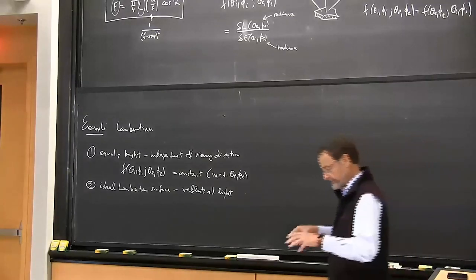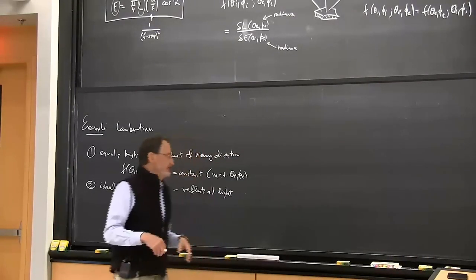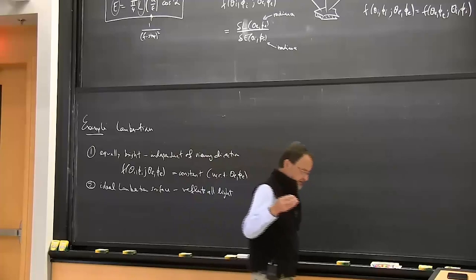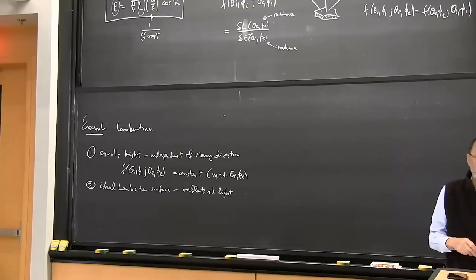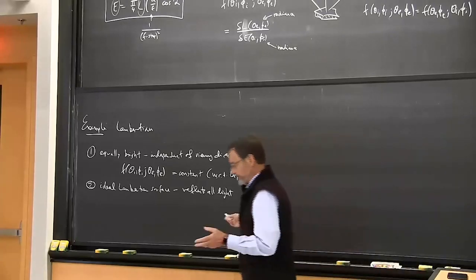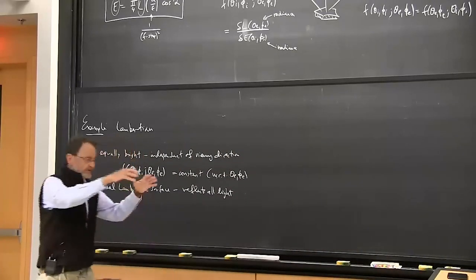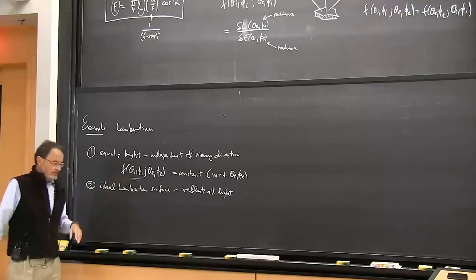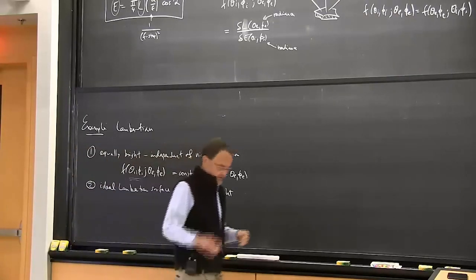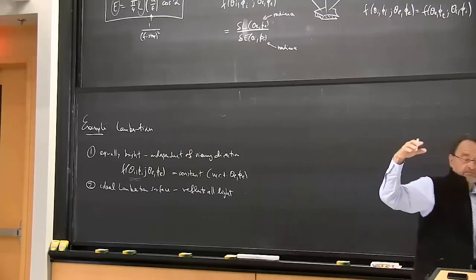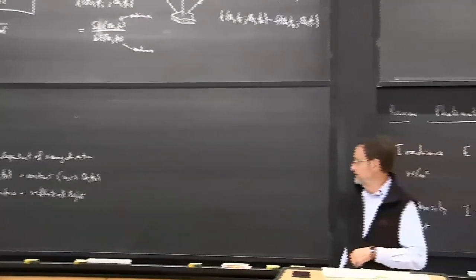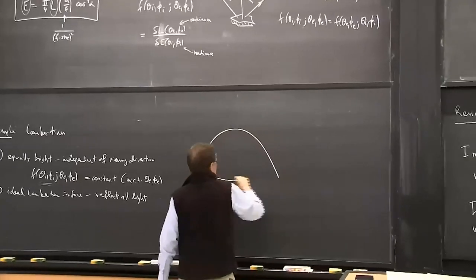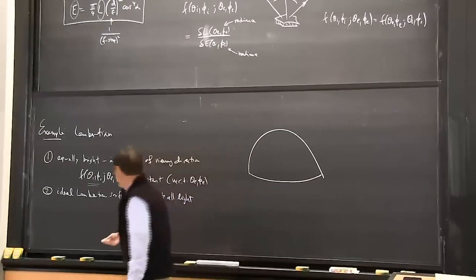The BRDF is sort of the atomic thing—it's the low-level detail. In many cases we're interested in integrals of that. For example, if I don't have a point source but have a distributed source like the lights in this room, I can simply integrate over a hemisphere of incident directions, taking into account how much light is coming from each direction. Similarly, we need to integrate over a hemisphere to get all of the energy coming off the surface.